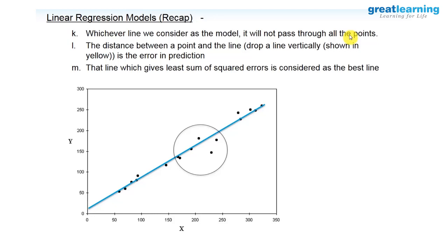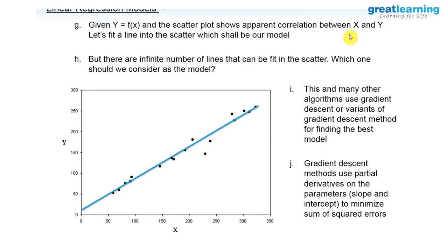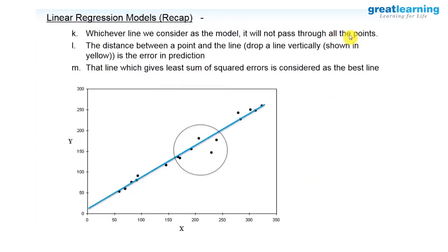The best fit model will still do some errors — as you can see here, it is doing some errors. But this is the model which does the least amount of errors. Compared to the other models, all of them are doing errors, but this particular selected line is doing the least errors. The condition to find the best fit line is that line which does least errors in prediction. That line is called the best fit line.